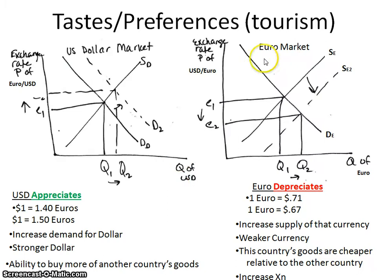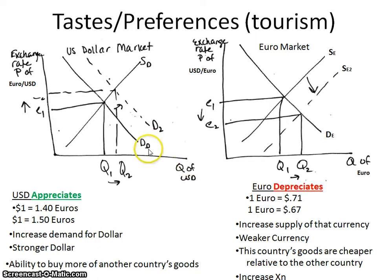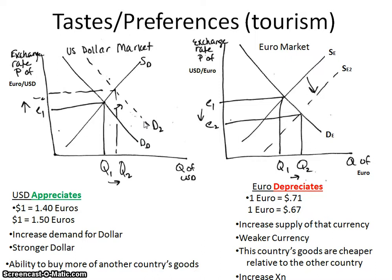Let's look at tourism. In the euro market, the U.S. dollars are on the horizontal axis, so the exchange rate is the price of euros per U.S. dollar. In this situation, there's an increase in the demand for the dollar — people from Europe want to buy things in the United States, so they have to supply their currency to demand dollars to buy our goods. An increase in demand for one country's currency is an increase in supply for the other.